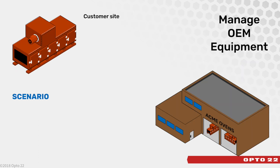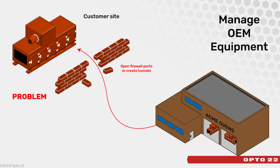First is our OEM example — Acme Ovens. They build heavy-duty ovens that get deployed to customers all over the globe. Acme would love to provide additional services to their customers, including predictive analytics, maintenance, and remote support. So all they ask is for their customer's IT department to open a port in their corporate firewall, permitting access to their network and ultimately access to their oven's control system. Yeah, that's not going to happen.